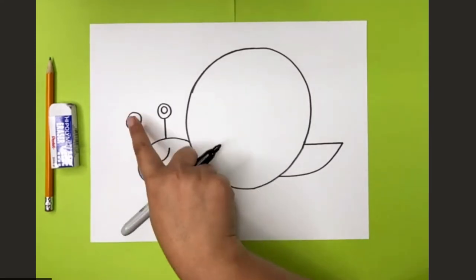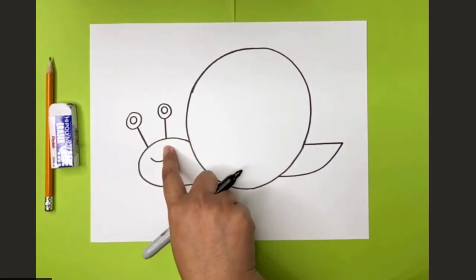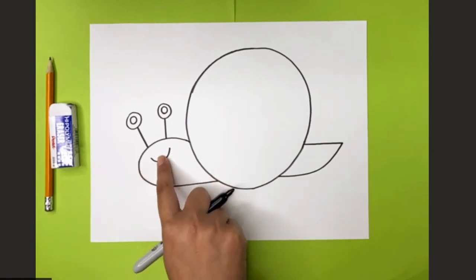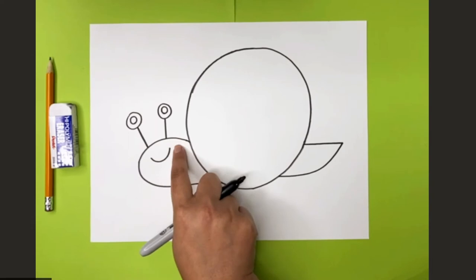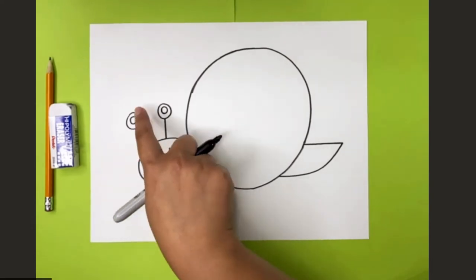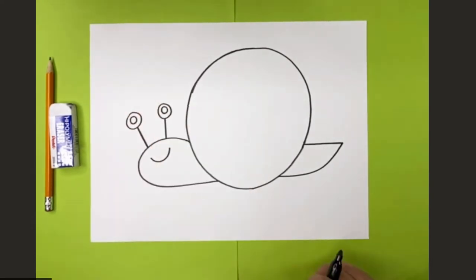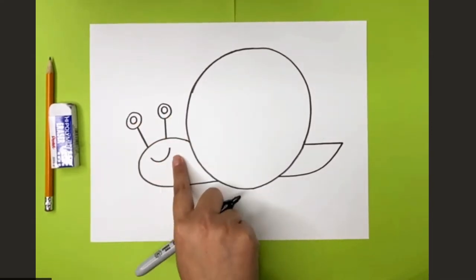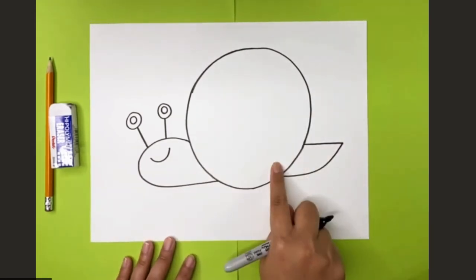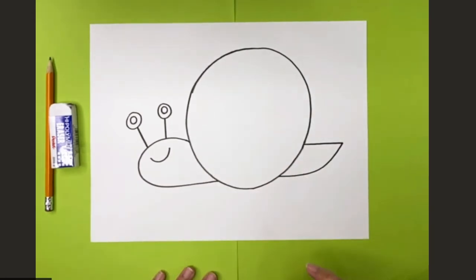Okay, so you have your eyes. Make sure you connect it to the head and a smiley face. You could do a tongue sticking out or a big smiley face. You could put cheeks if you want. You could put eyebrows if you want. You can make it your own. Okay, so now that we have our eyes and our smiley face, let's do the design for our snail shell. That was kind of hard to say.